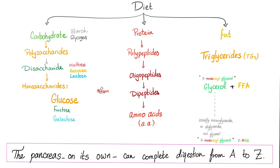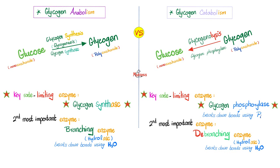Glycogen is a big sugar — the big sugar stored in animals is glycogen; in plants, it's starch. Glycogen build-up is the land of insulin, but glycogen catabolism is the land of glucagon. The process of glycogen synthesis is called glycogenesis, and the breakdown is glycogenolysis. The key rate-limiting enzyme for synthesis is glycogen synthase; for breakdown, glycogen phosphorylase.